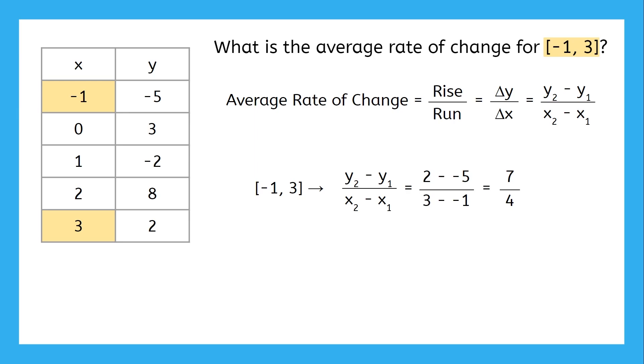But remember, average rate of change only applies to that specific interval. So if we change the interval, the rate of change will be different. For the interval from zero to one, we use the slope formula to find that the average rate of change is negative five, which is much different from the interval from negative one to three. Slope of a line is the same for all points, but never assume the same average rate of change for a function will be the same for multiple intervals.